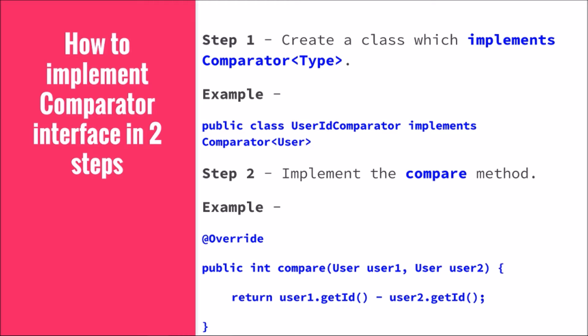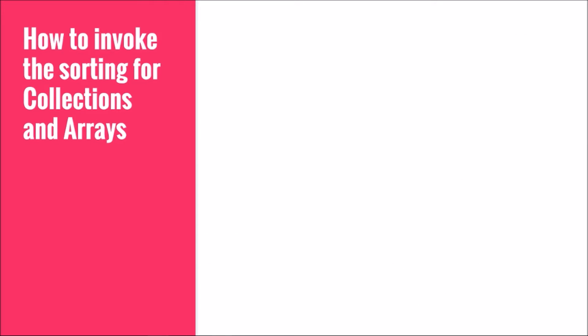It returns zero if both ids are equal, meaning both elements remain in their current positions in the list. If it returns a positive value, user2 will come before user1, because a positive result means user1's id is greater than user2's id.